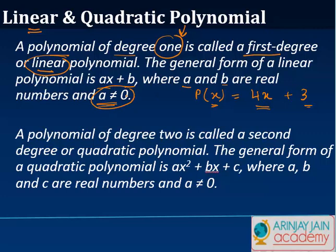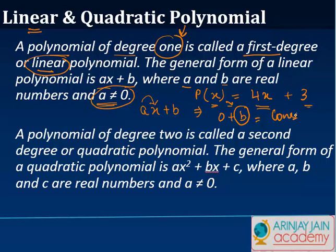The reason we say a is not equal to zero: if you have ax plus b and a equals zero, it becomes zero times x plus b, which is just b — a real number. That effectively makes it a constant polynomial. So the condition is a cannot be equal to zero.